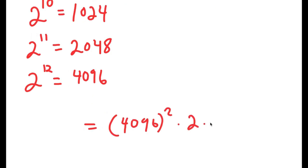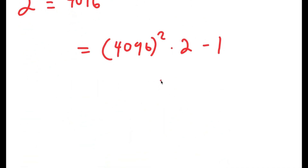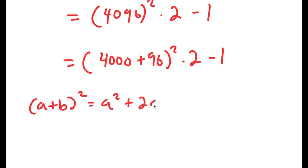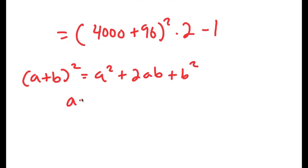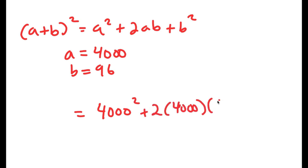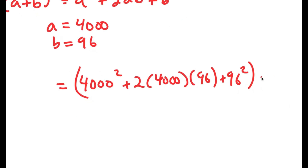Now I rewrite 4096 as 4000 plus 96 squared times 2 minus 1. Since 4096 squared is hard to calculate directly, I use the identity (A plus B) squared equals A squared plus 2AB plus B squared, where A is 4000 and B is 96. This gives 4000 squared plus 2 times 4000 times 96 plus 96 squared, all times 2 minus 1.